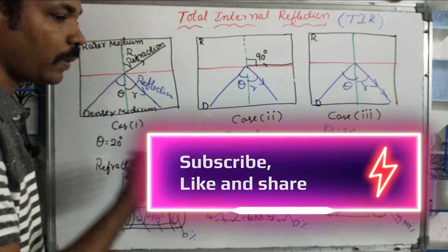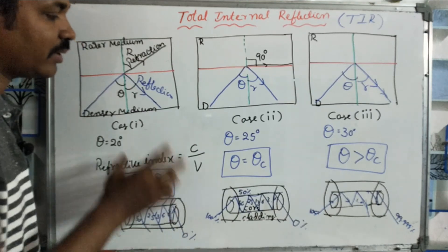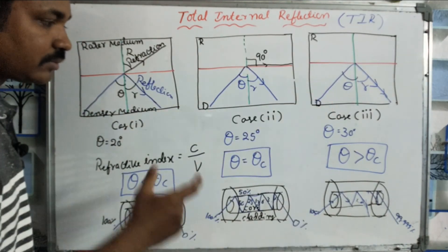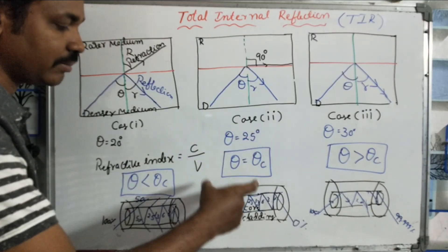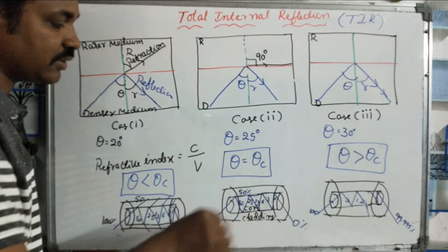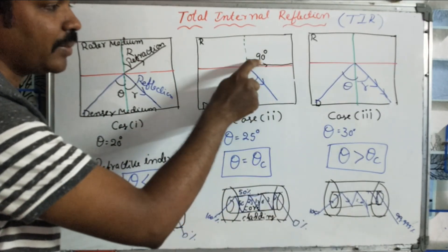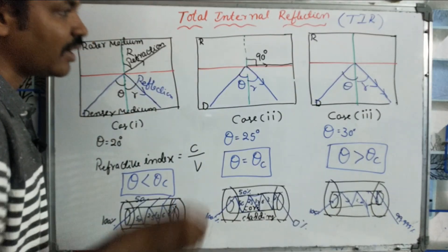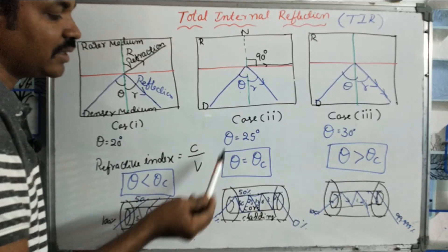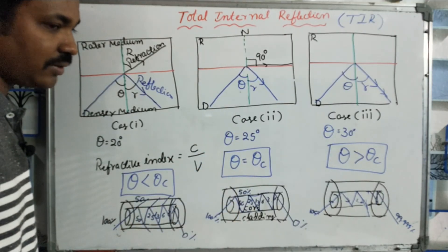If you have any information to communicate, you can use optical fiber. This is a very important concept — the critical angle. The critical angle is that particular incident angle at which the refraction angle maintains 90 degrees with the normal. That particular incident angle is called the critical angle. Thank you.